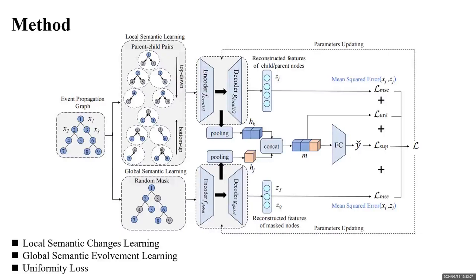In order to achieve more rapid and effective rumor detection without the need for data augmentation, we propose a novel Semantic Evolvement Enhanced Graph Auto-Encoder for Rumor Detection model in our paper.